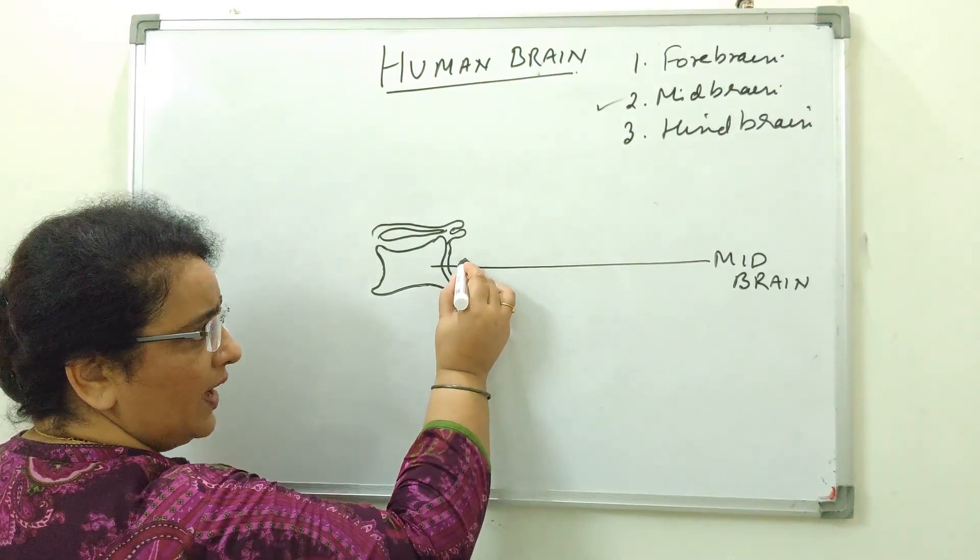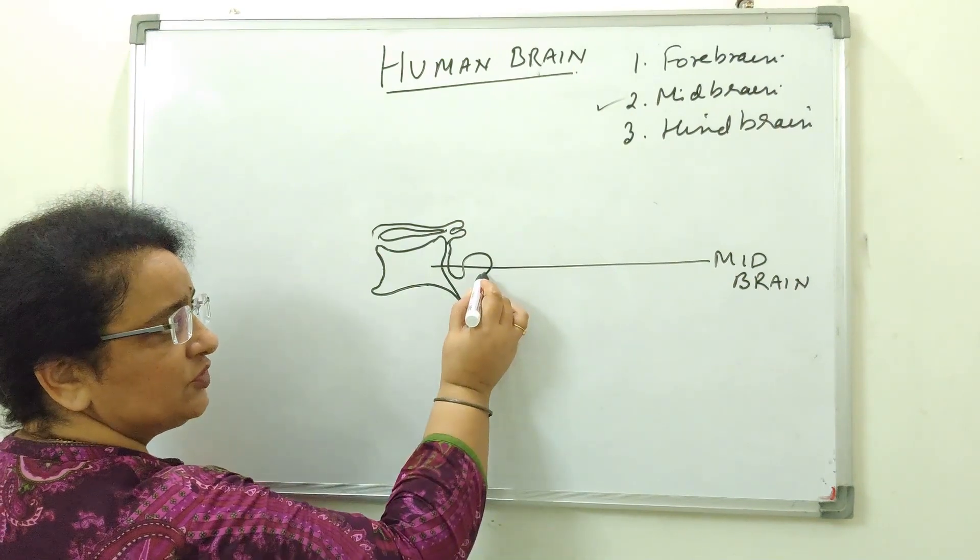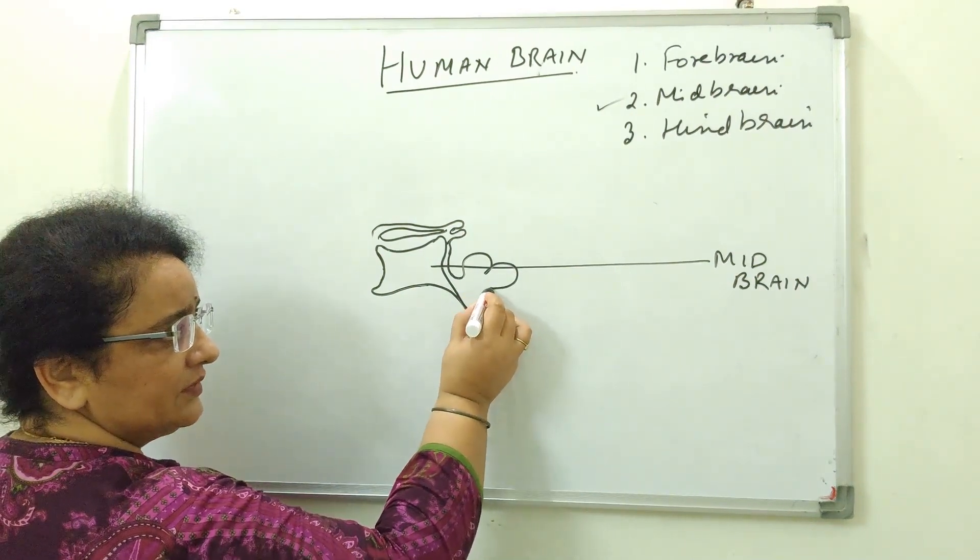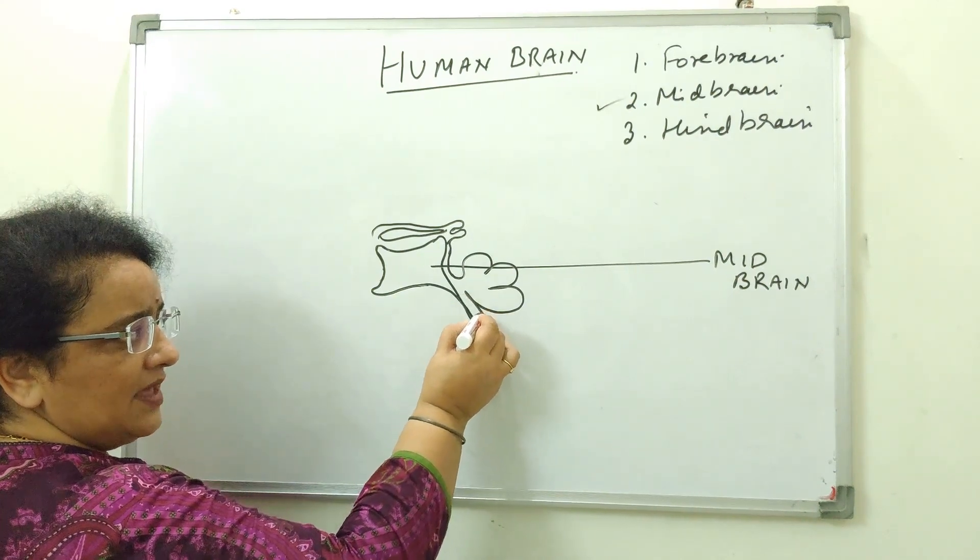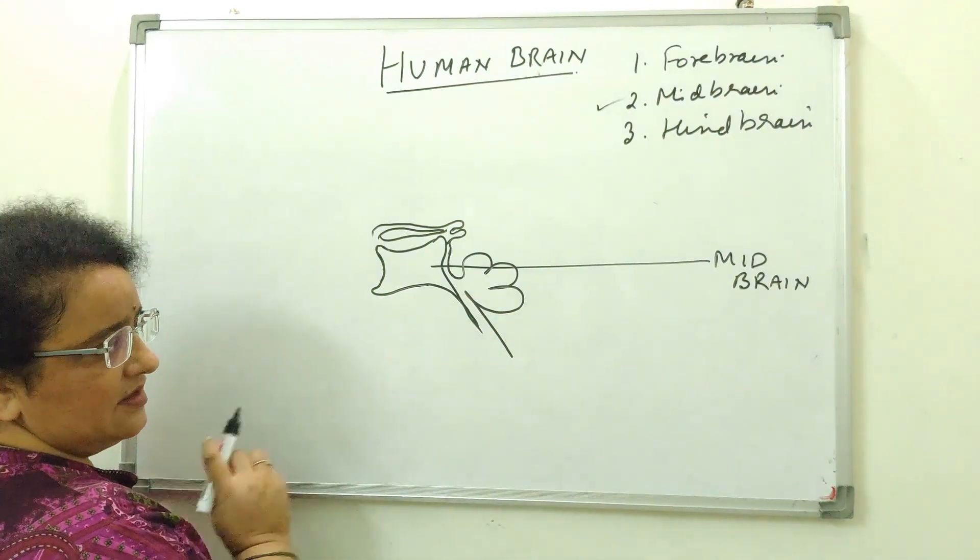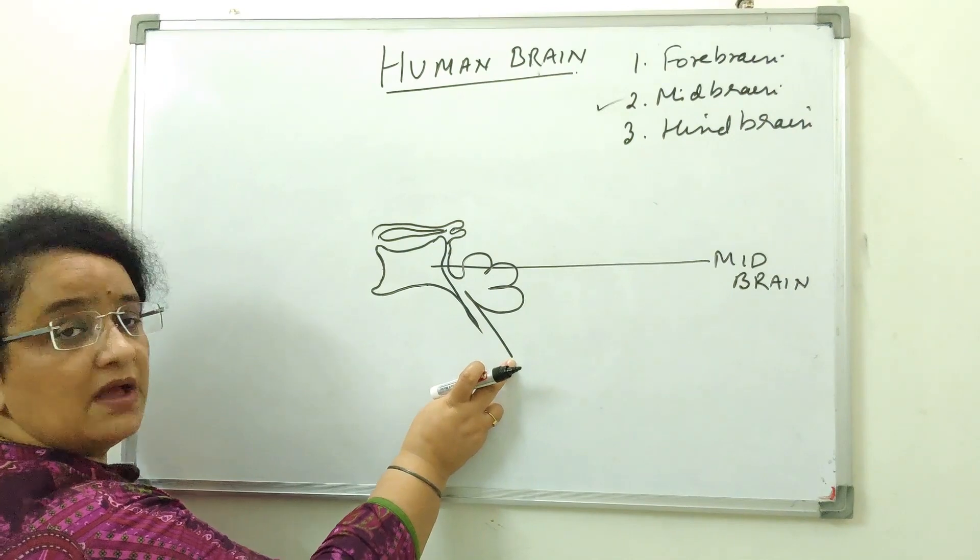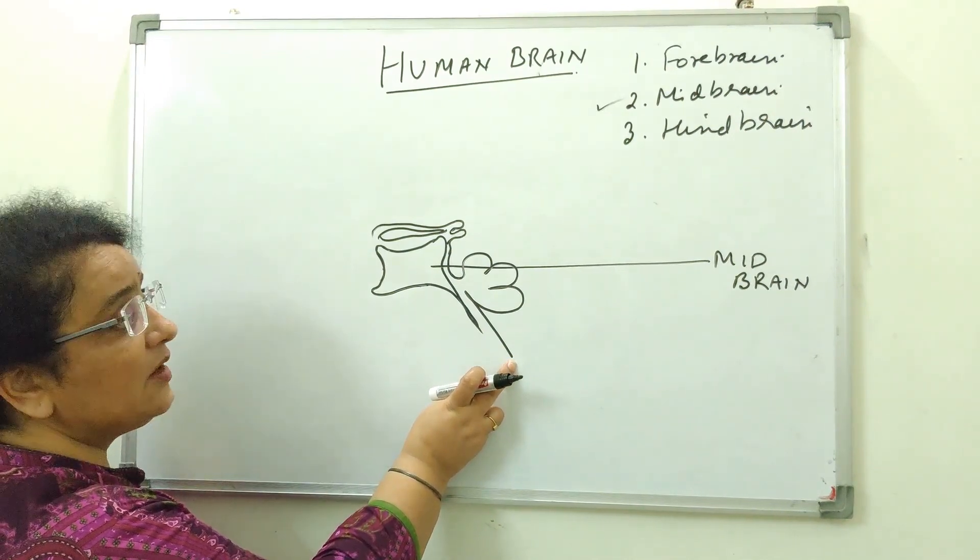And here you draw a three lobe structure. Just look at my hand. And then one, two and three and coming back again like this. This part will become the part of spinal cord.